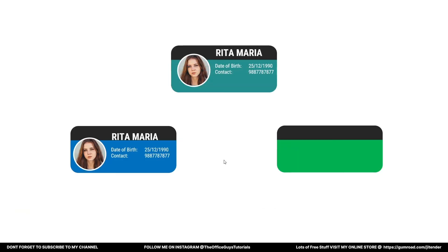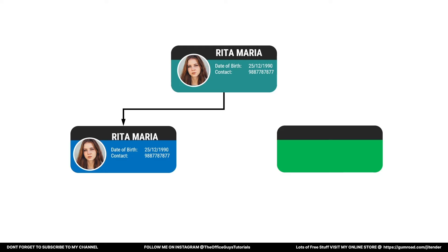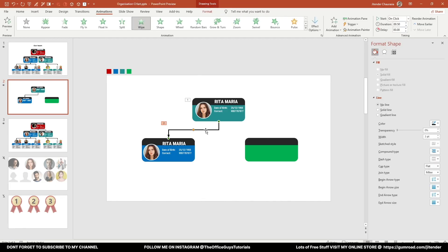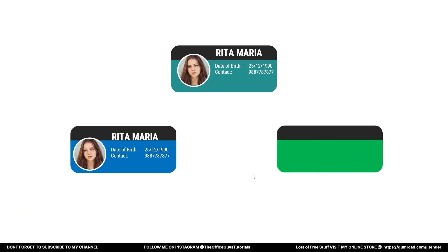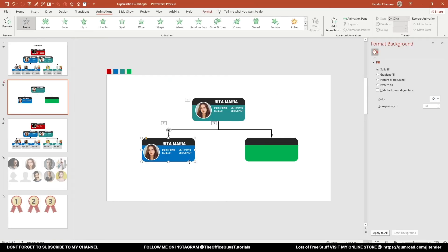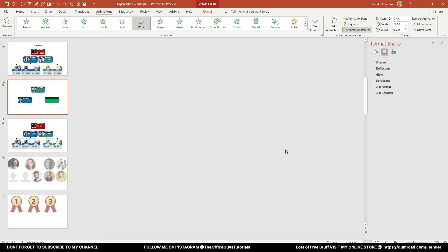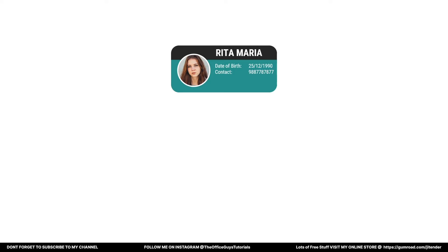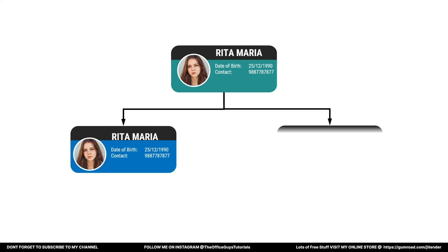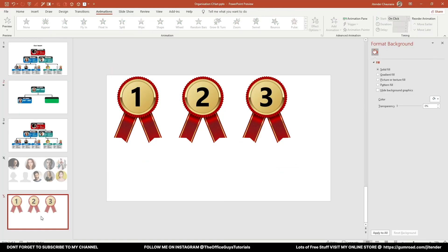You can see the top shape appears first, then the connecting line, then the next shape. Use Ctrl+drag to duplicate shapes and position them for the other team members. Then select each group, use Animation Painter, and click the new shape to transfer the animation. Do the same for each connector line. Now you'll see the shapes appear in sequence: first, second, third, fourth, and fifth.